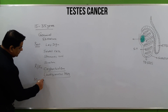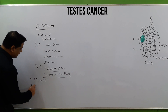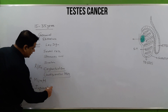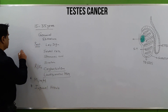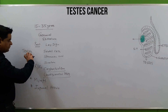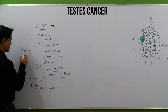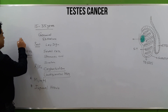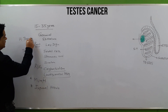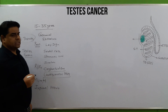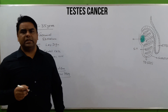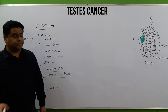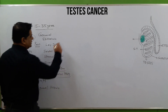Other risk factors include mumps, inguinal hernia, testes torsion — which involves complete twisting of the testes — and excessive hormonal or steroid therapy, which can have endogenous or exogenous causes.